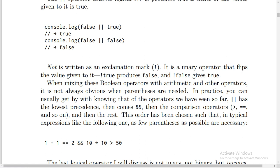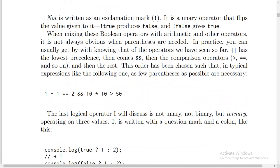then comes AND, then the comparison operators (>, ==, <=), and so on. This order has been chosen such that in typical expressions like the following one, as few parentheses as possible are necessary. Like this example: 1 + 1 == 2 && 10 * 10 > 50.